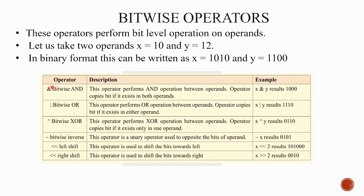The bitwise operators are: bitwise AND (&), bitwise OR (|), bitwise inverse (~), and left shift and right shift. In bitwise inverse, 0 becomes 1 and 1 becomes 0. Then XOR operations, then OR. Now for x AND y, and x AND y operations.